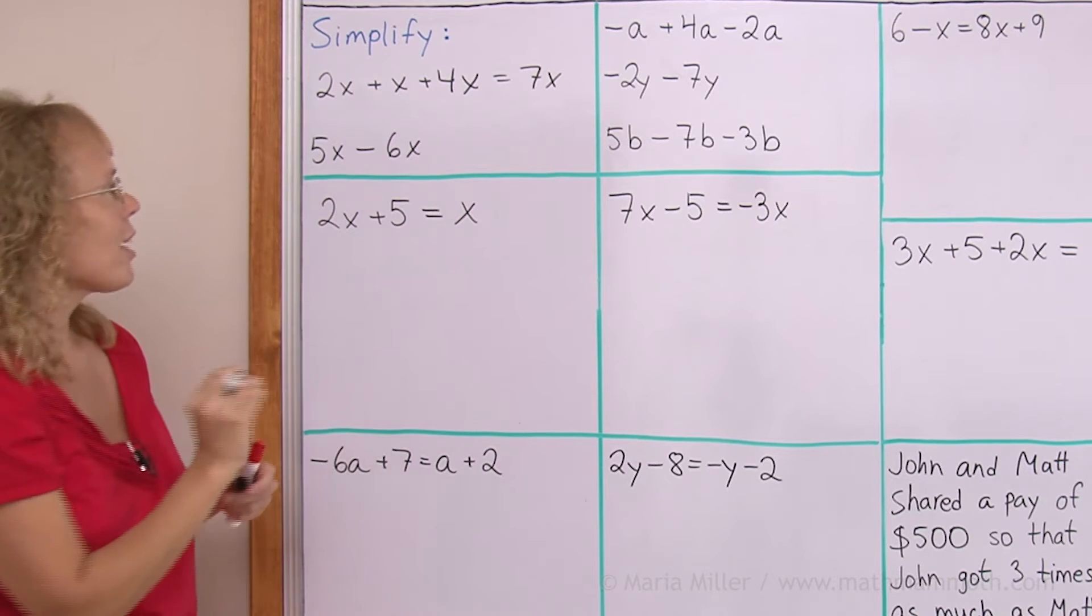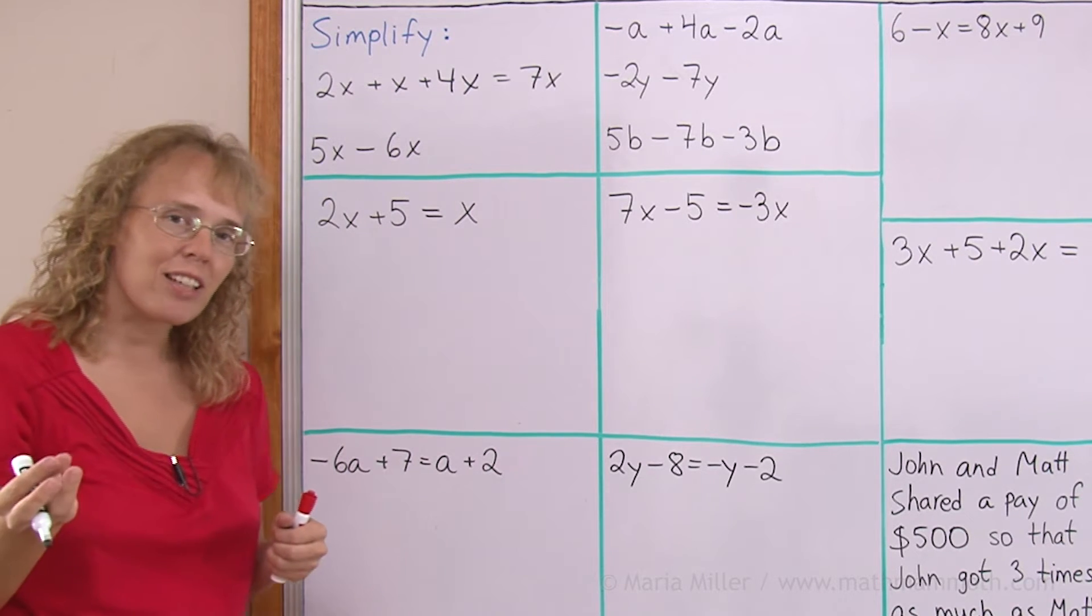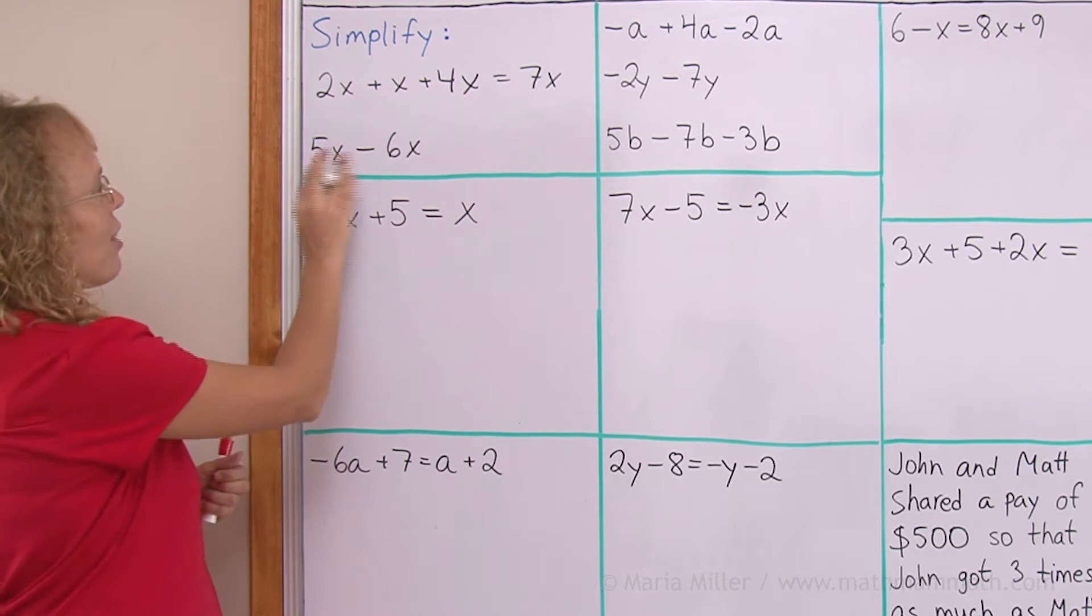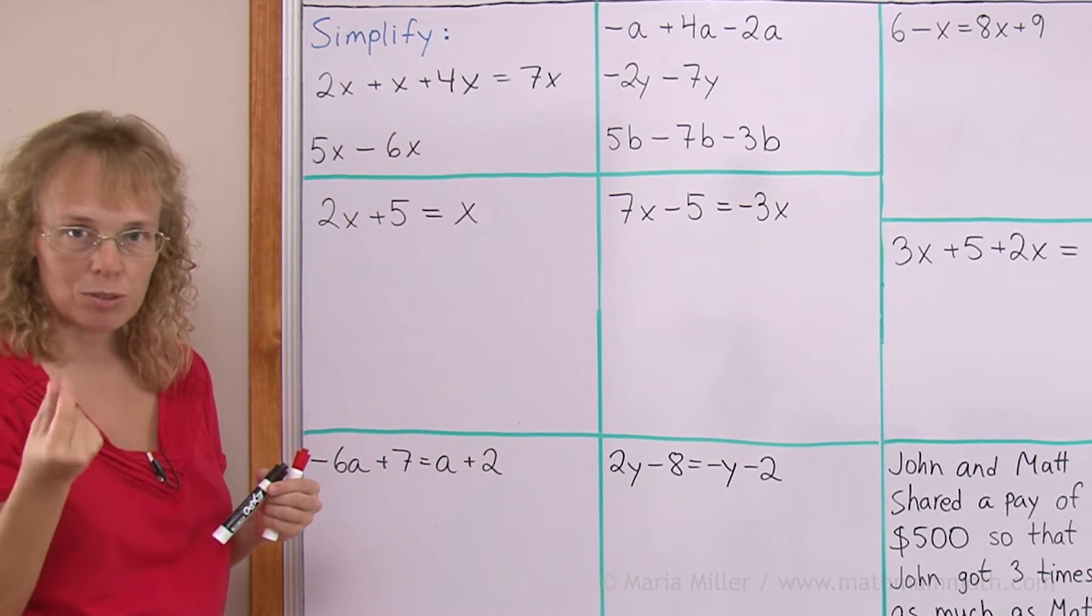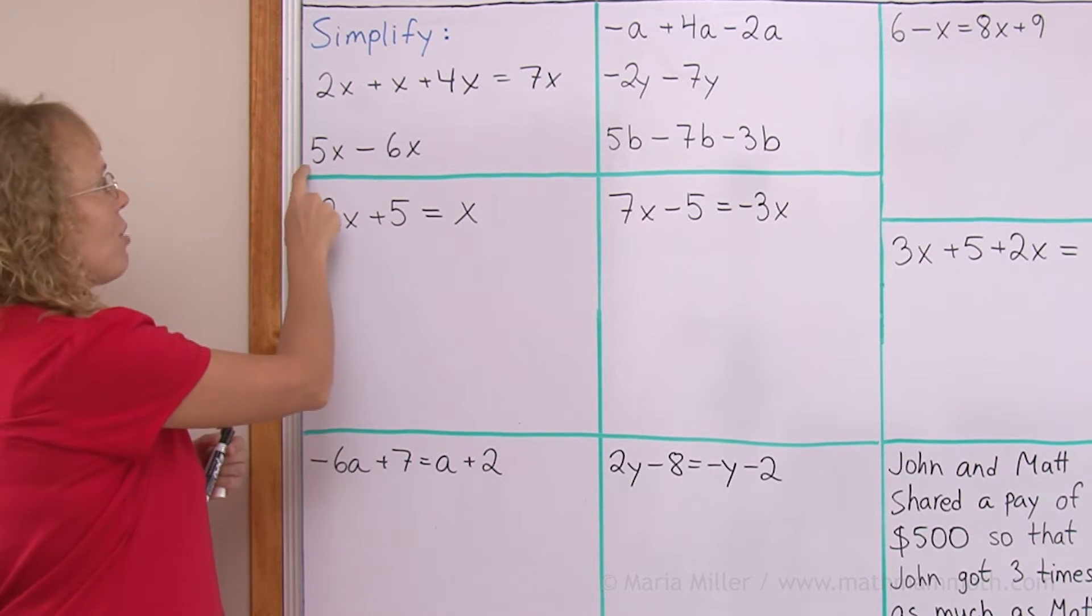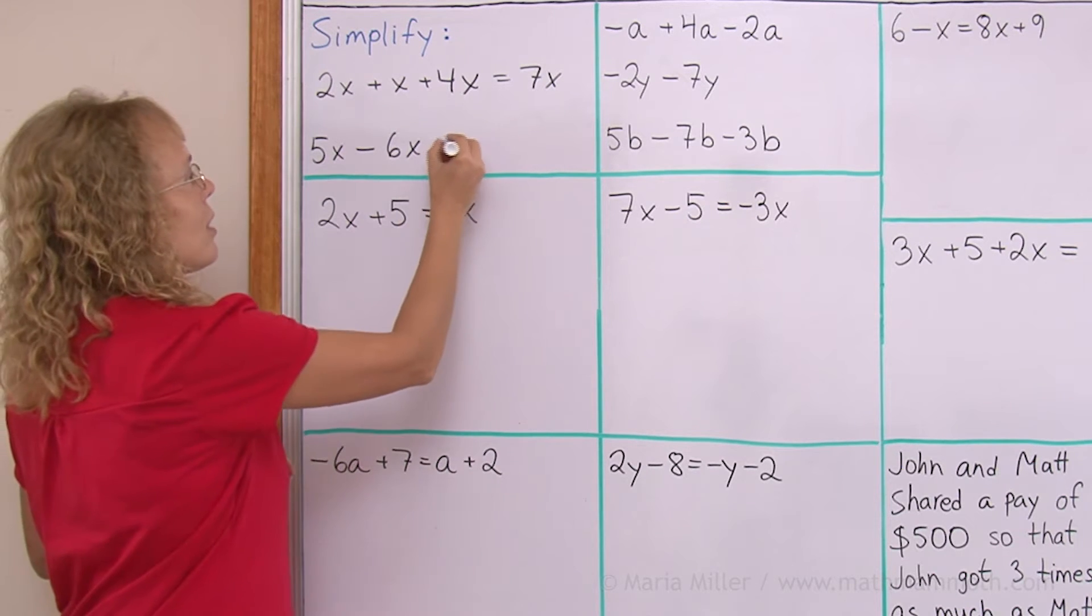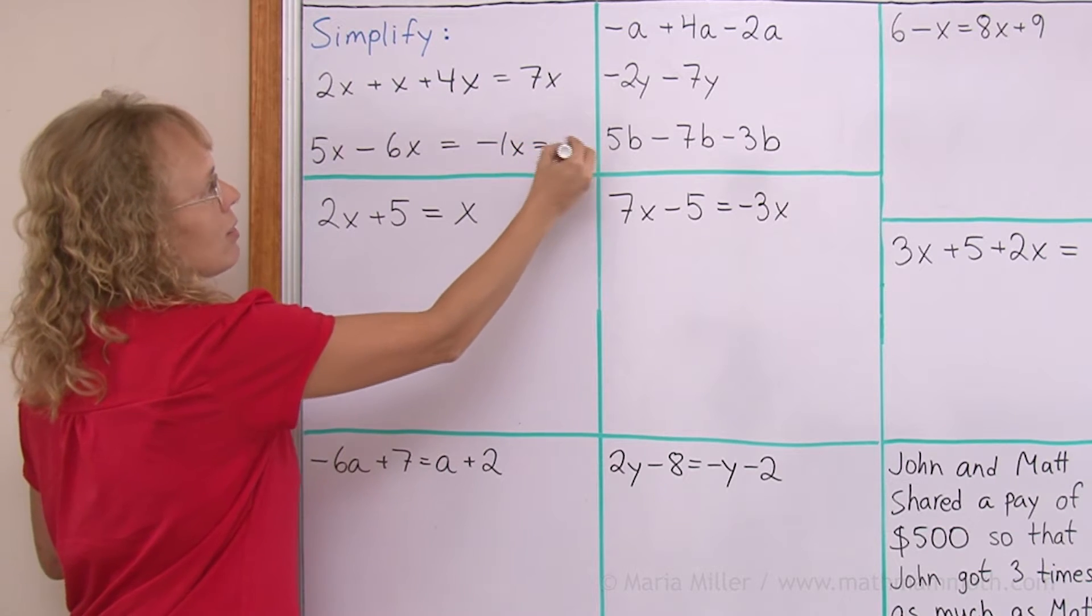Or here, 5x minus 6x. Now, if I asked you 6x minus 5x, then you can say that it is x, right? But here, 5x minus 6x. Just subtract those numbers 5 and 6. Go 5 minus 6. That's negative 1. And so, then just tag the x into it. It's negative 1x or negative x.